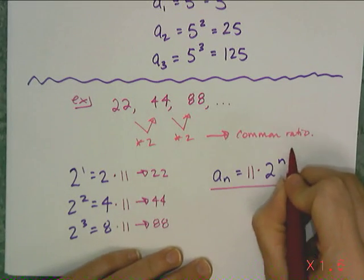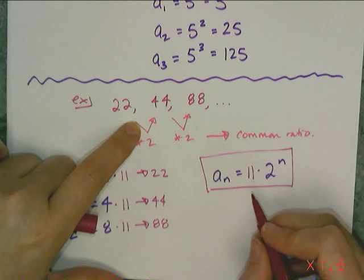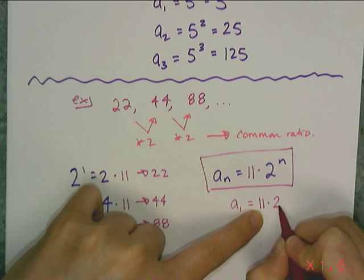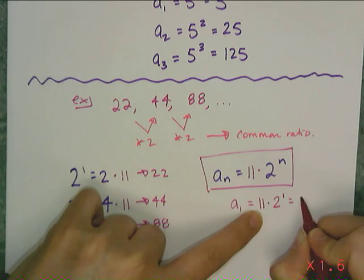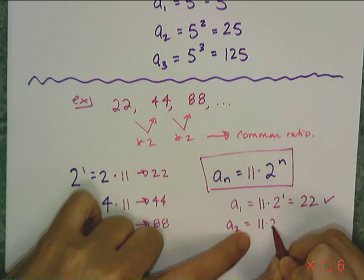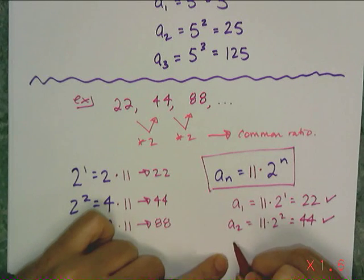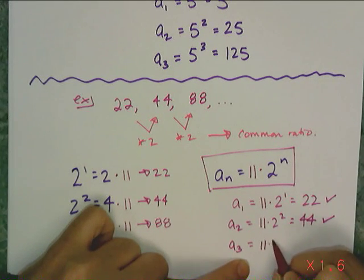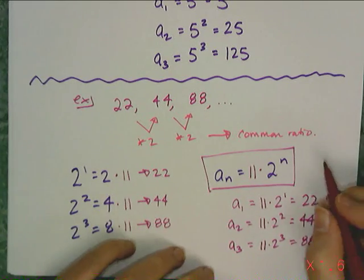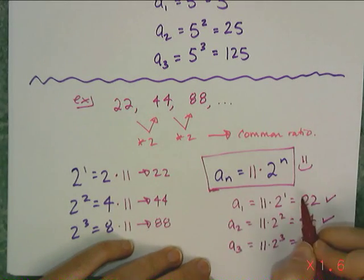I can take this rule and figure out what the first three terms to make sure it matches. So I take a sub 1 and I take 11, multiply it by 2 to the first power, I better get 22. And I do. If I plug in 2, I better get 44. I do. If I plug in 3, I better get 88. And I do.